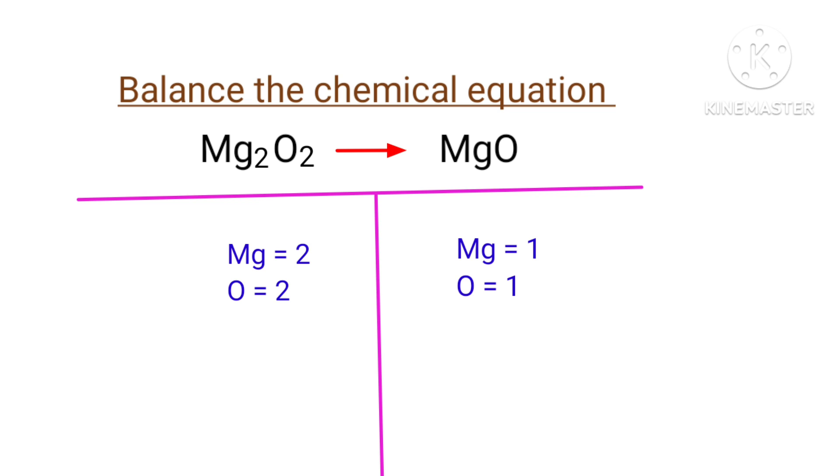Now we can equal the number of atoms on both sides. To do this, we can use coefficients. If you observe this equation, the number of atoms at the left hand side are double to the number of atoms at the right hand side.